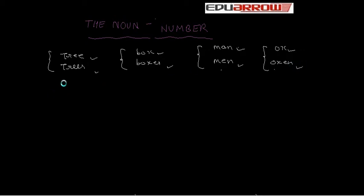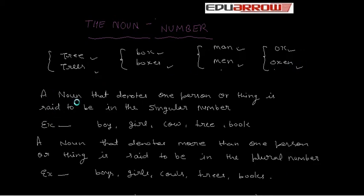a noun that denotes one person or thing is said to be in the singular form. Examples: Boy, girl, cow, tree, book. And,